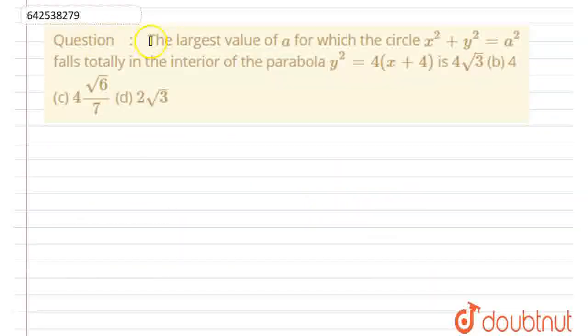Hello everyone, let's start this question. This question says, the largest value of A for which the circle x square plus y square equals A square falls totally in the interior of the parabola y square equals 4x plus 4 is: option A is 4 root 3, option B is 4, option C is 4 root 6 upon 7, option D is 2 root 3.